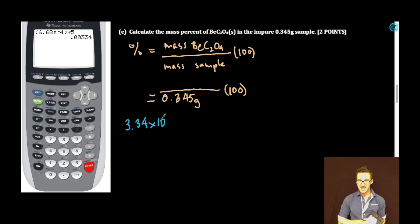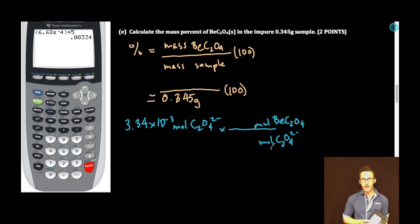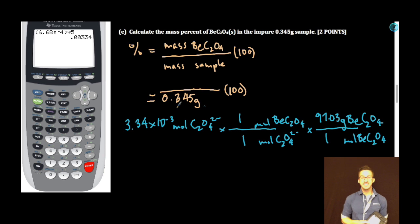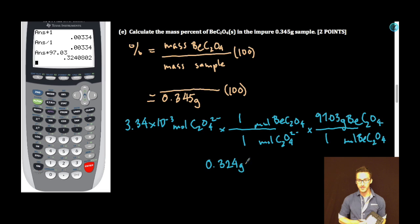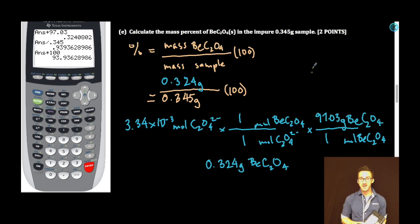If I have 3.34 times 10 to the minus 3 moles of oxalate, I can determine simply by looking at the ratio in the compound, how many moles of beryllium oxalate there were. As I look at the ratio of beryllium to oxalate in beryllium oxalate, it's a one to one ratio. Then we'll convert to grams. Moles of beryllium oxalate. Molar mass of beryllium oxalate is 97.03. Let's calculator this up. So we have 0.324 grams of beryllium oxalate in our original impure sample. But don't stop there. We weren't looking for the mass, we were looking for the mass percent. So if we have 0.324 grams of beryllium oxalate in our 0.345 gram sample, divided by 0.345 times 100, then our percent by mass is 93.9% beryllium oxalate. And we are done.